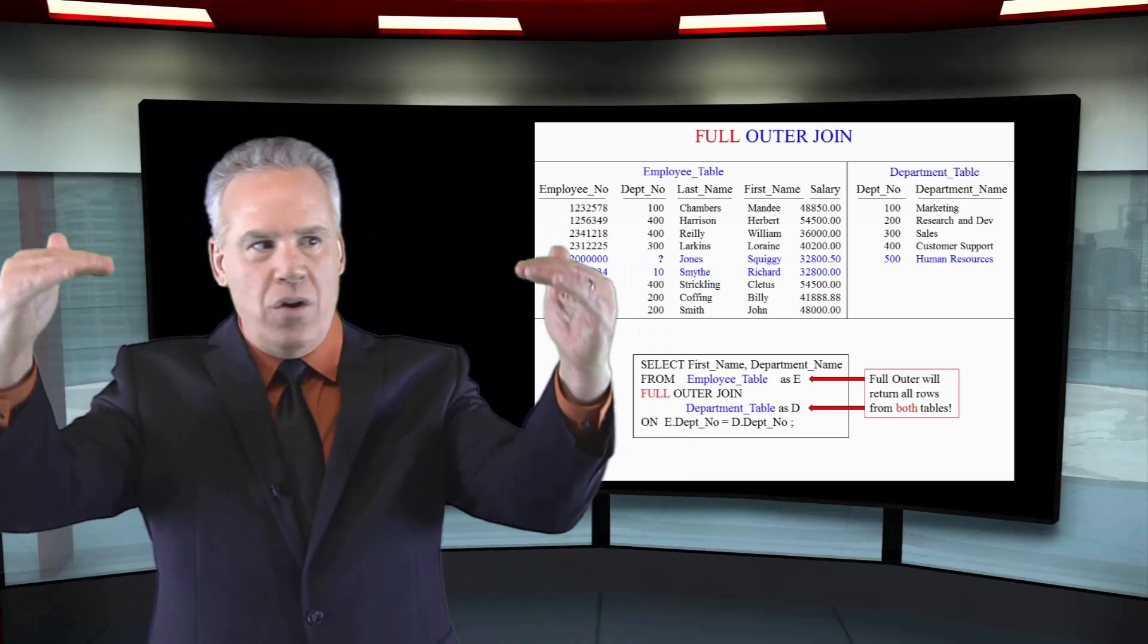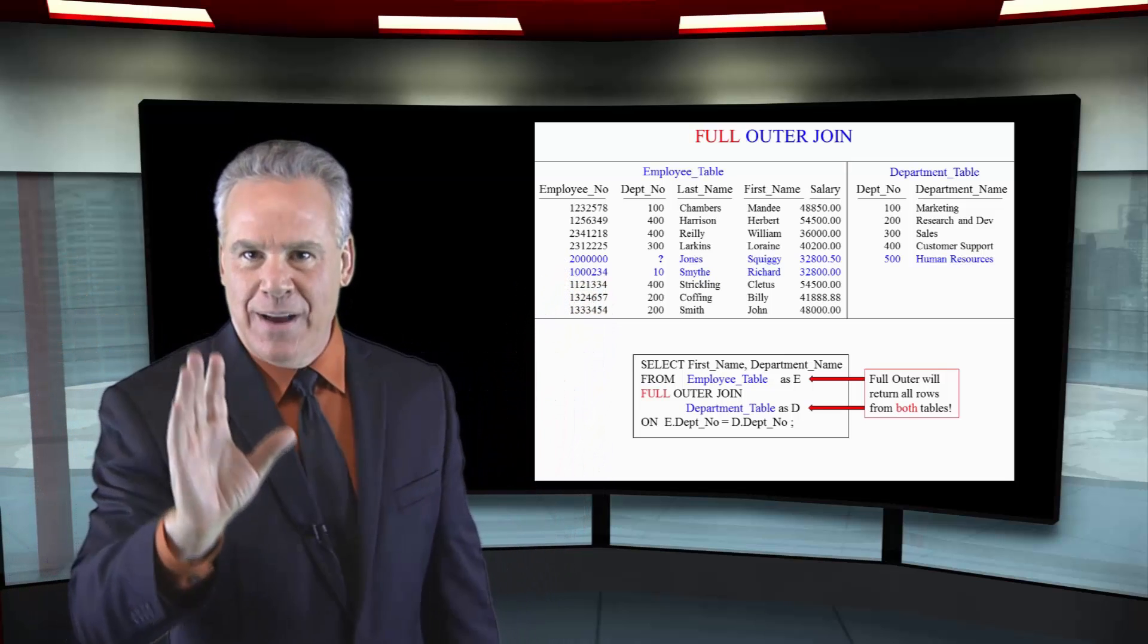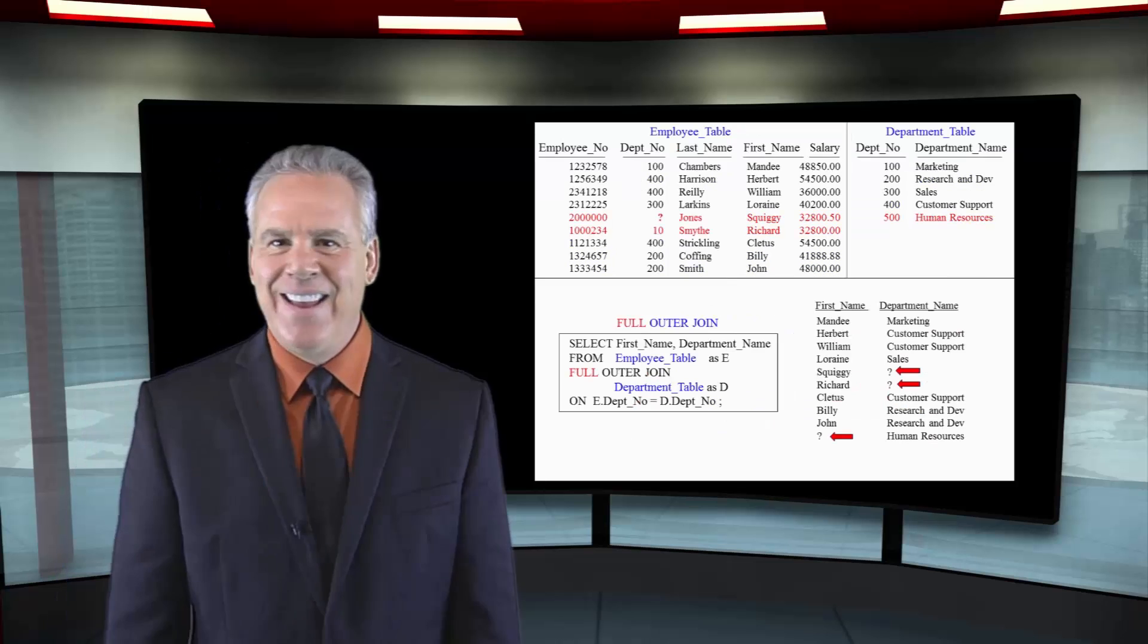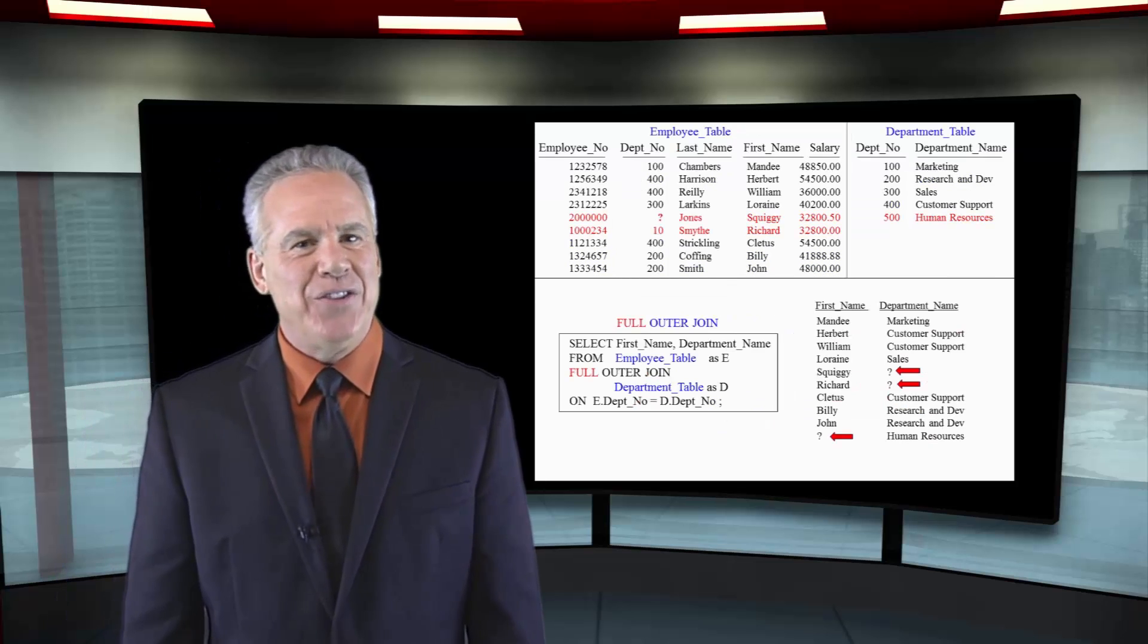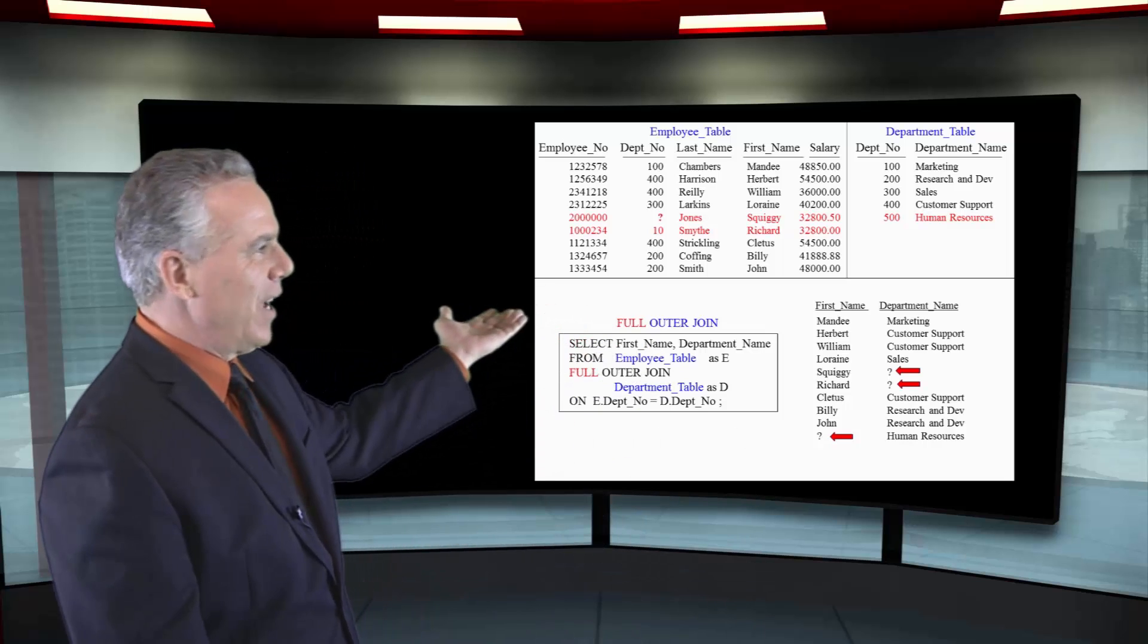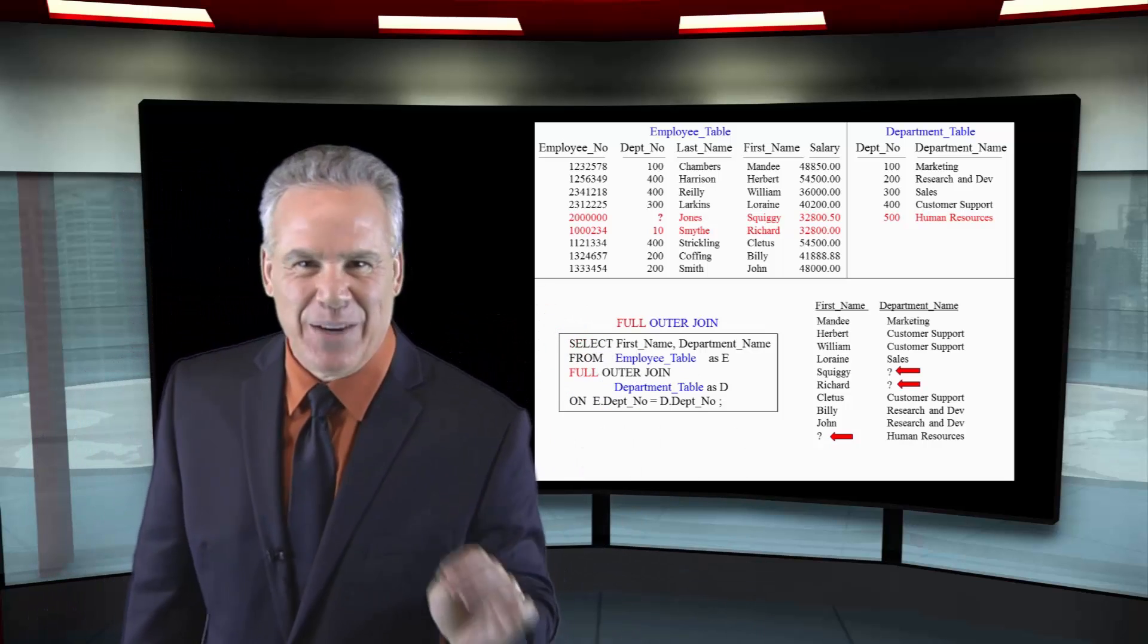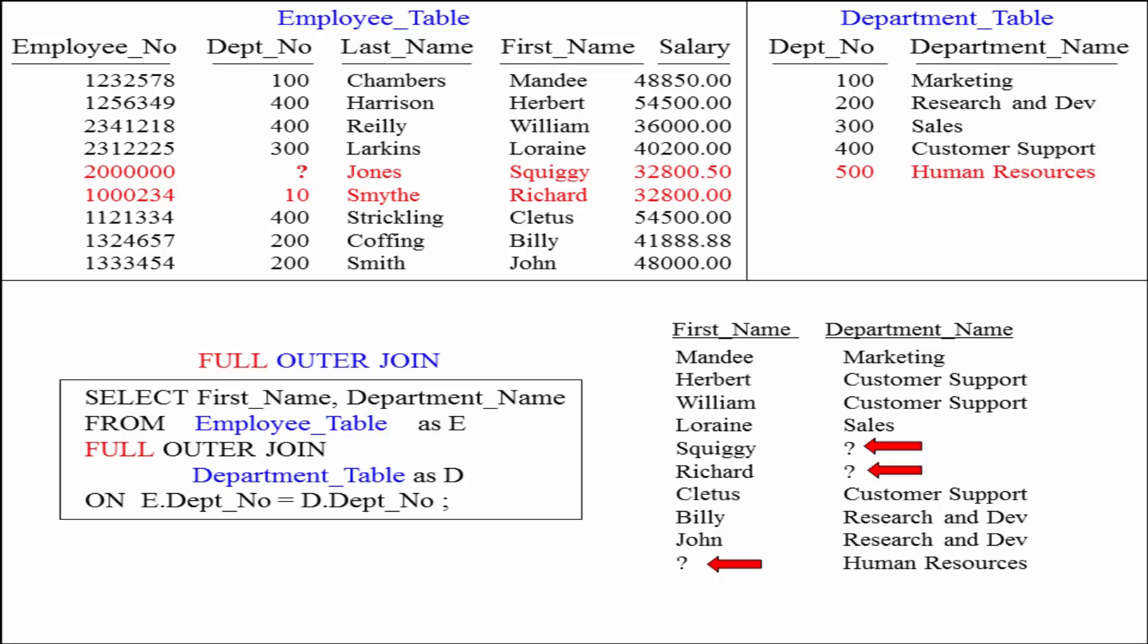All rows from all tables are coming back whether they got a match or not. In the report, you can see in many cases we got the first name and the department name. You can immediately recognize which rows were mismatched, and that is why you do a full outer join.